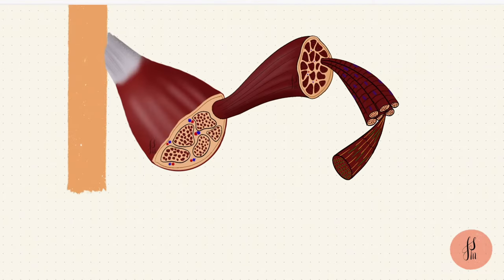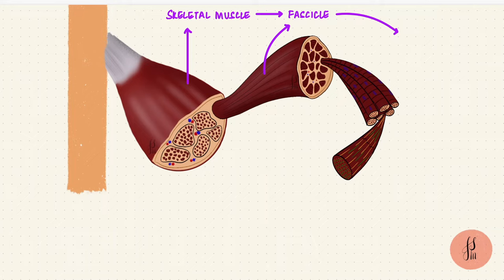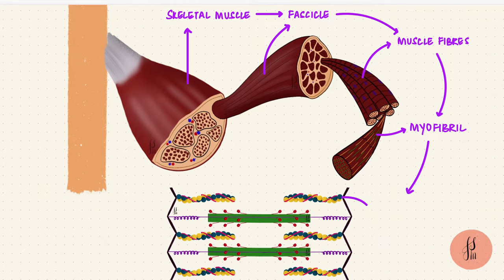First I'm going to do a quick recap on the structure of a skeletal muscle. Muscles are made up of fascicles which are bundles of muscle fibers. The muscle fibers are made up of myofibrils and the myofibrils consist of myofilaments.